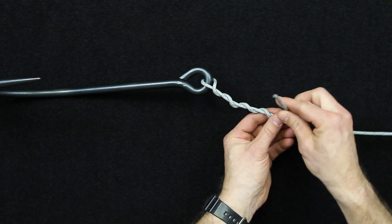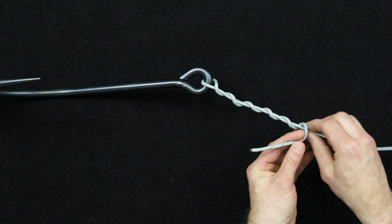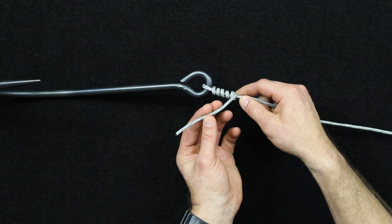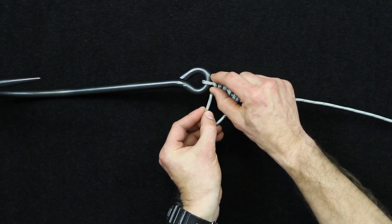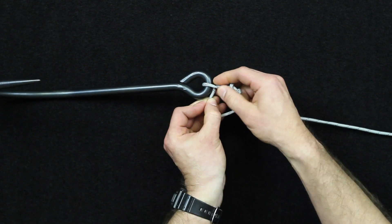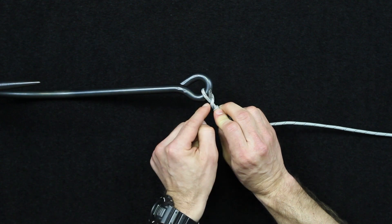So there's our five and then you're going to take the working end and slide down your wraps so it tightens up. Then take that working end and pass it through this loop that was created here in the top of the knot. So right there.